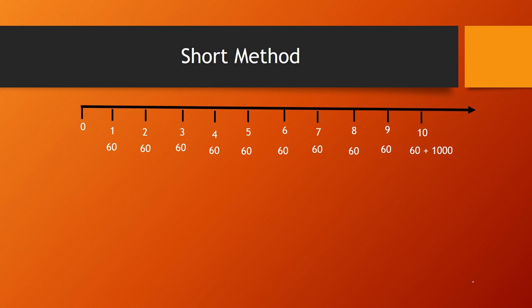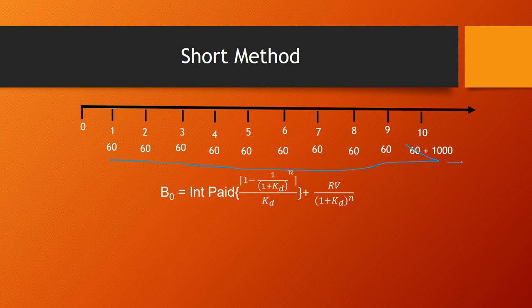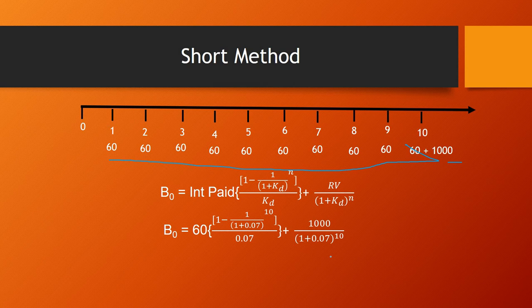Now let's use the shortcut method. Since the interest payments form an ordinary annuity, we use the present value of ordinary annuity formula: Interest × [1 − 1/(1+KD)^N] / KD + MV / (1+KD)^N. Here the interest is Rs. 60, KD is 7% (since 14% per annum divided by 2 for six months), and N is 10.